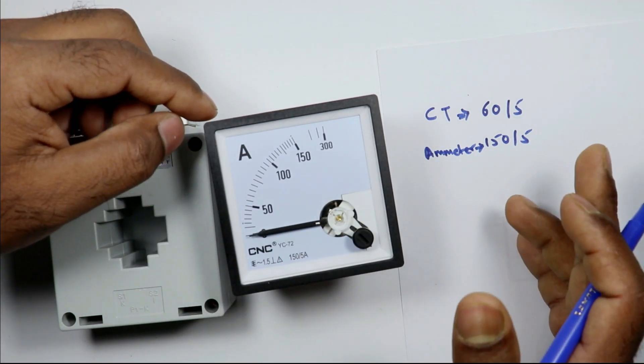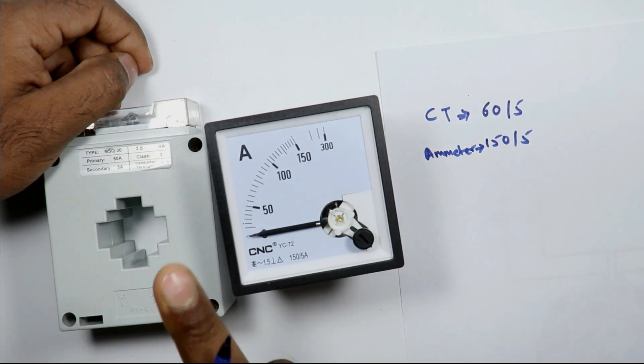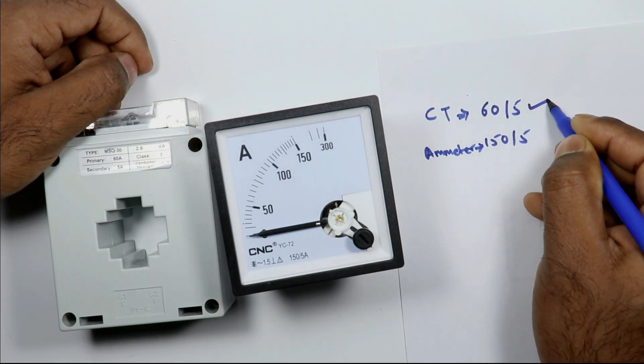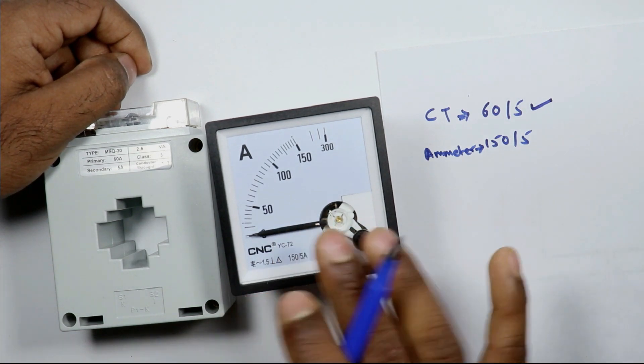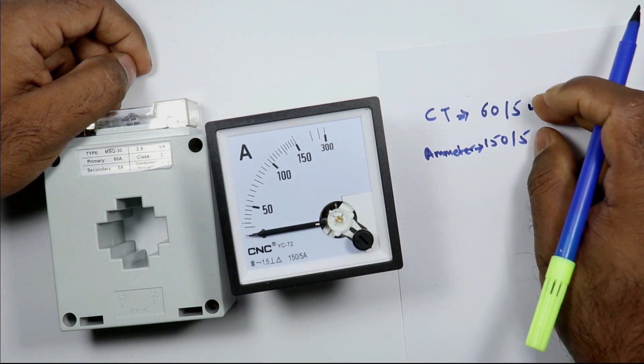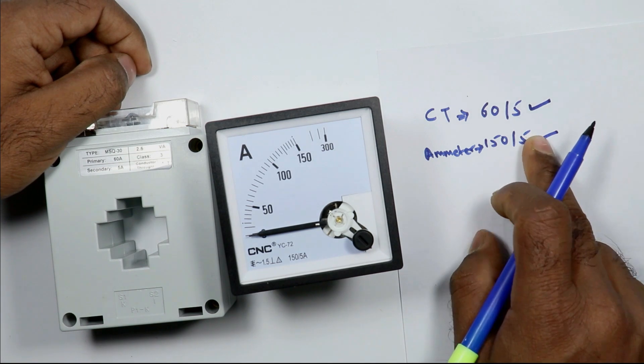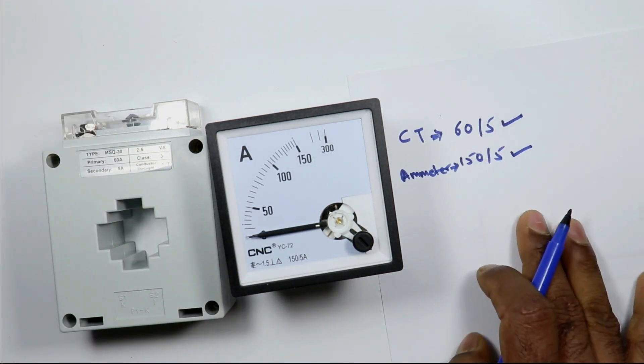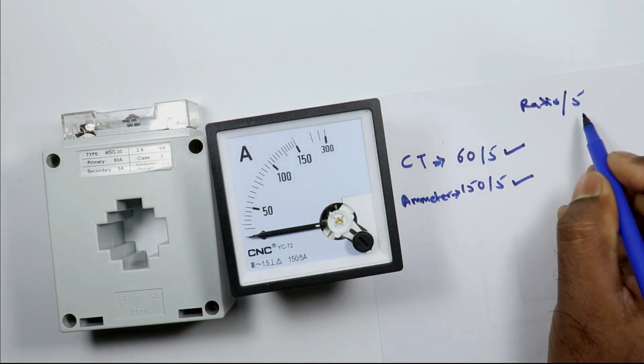Keep one thing in mind before scaling: the ratio of this CT in output is 5 and also secondary ratio of ammeter is 5. This means secondary must be same. You will find two types of ratio for CT. Ratio can be 5 or can be 1.